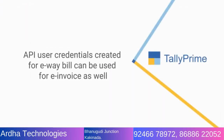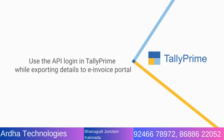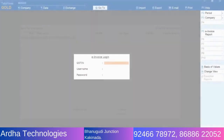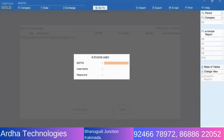If you have already integrated with API for an e-way bill system, you can use the same API credentials for the e-invoice system. You will receive a client ID and client secret on your registered mobile number. Once the API user creation is completed, use the API username and password in Tally Prime to login to the e-invoice system directly.